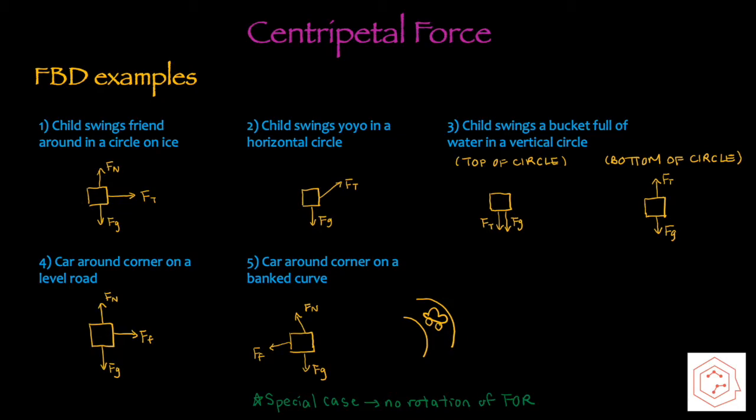Last but not least, a car rounding a banked curve. In this case, the gravitational force is acting downwards as always. The normal force is acting diagonally upwards, pointing inwards to the curve. The frictional force is also pointing inwards and diagonally downwards due to the banked curve. Banked curves are special cases where there's actually no rotation of the frame of reference, so the free body diagram must be kept in this manner.